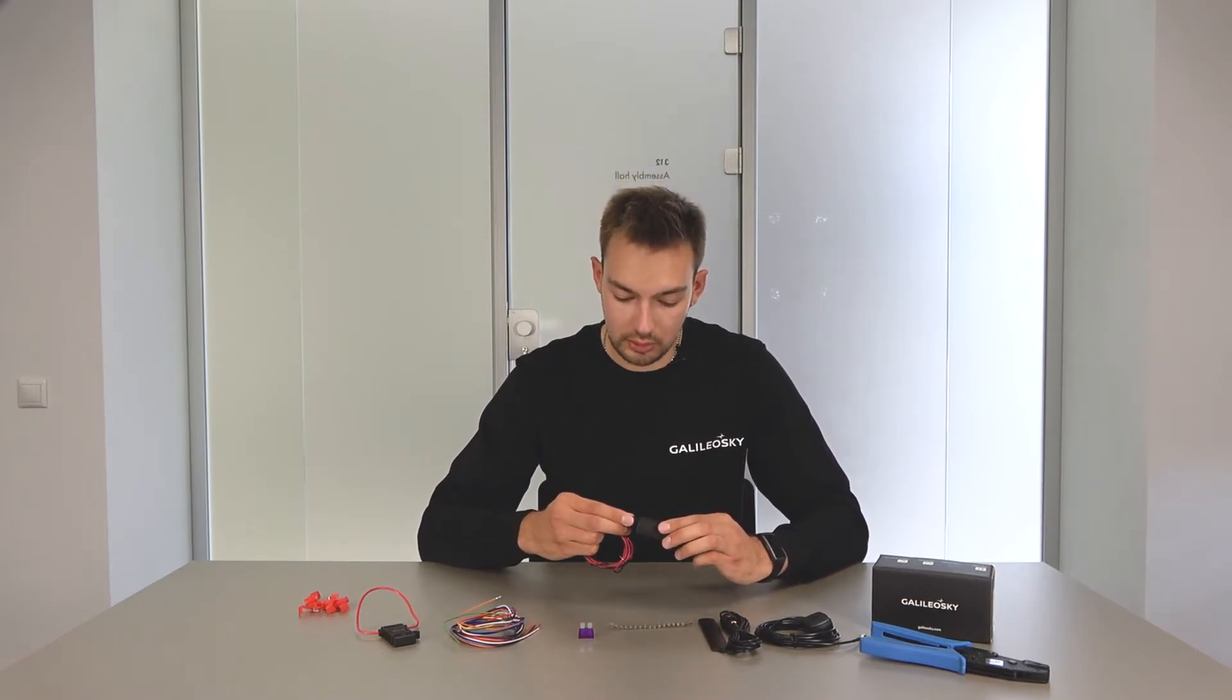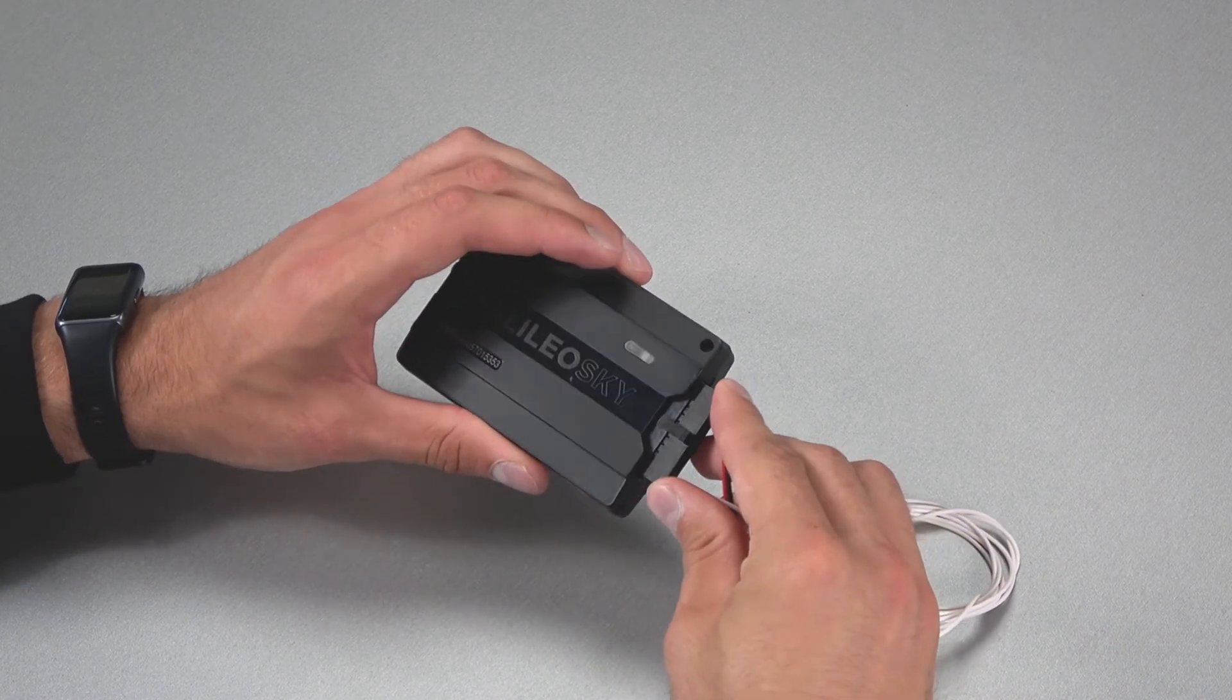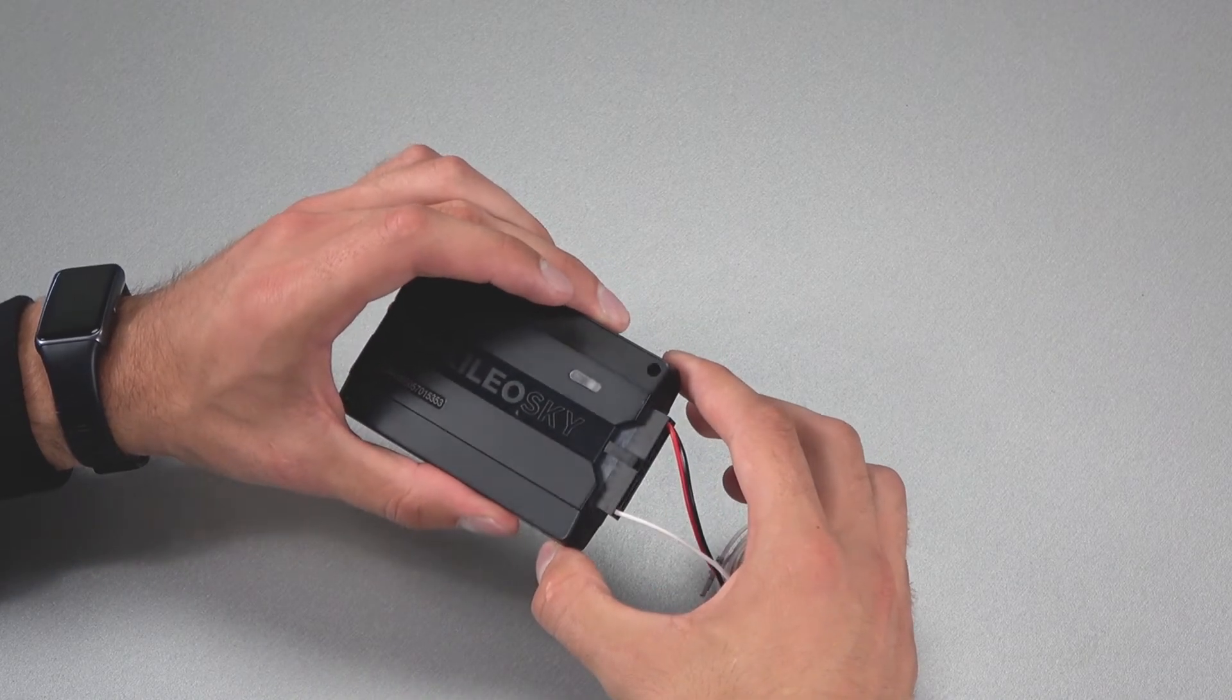Now, the wires are mounted into the connector and plugged into the onboard network. Simply insert the connector into the device until it stops. Like this. The latch on the connector is fixed and prevents it from spontaneous detachment.